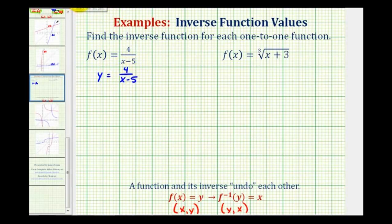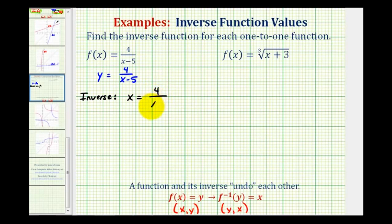To determine the inverse function we're going to interchange the x and y variables. So the inverse function will be x equals four divided by the quantity y minus five. This is our inverse function, but now we want to solve this for y and then replace y with inverse function notation.